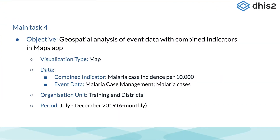For the last example in this subsection, we will be creating a map that combines a thematic layer using data from the aggregate model with an event layer using data from individual events. We will display the number of cases per 10,000 population and the total number of malaria cases by district on the map.